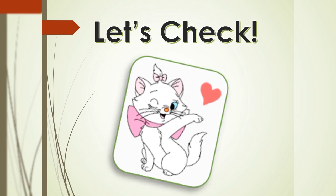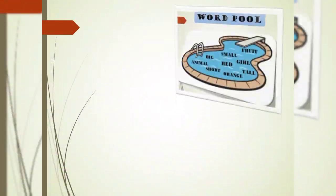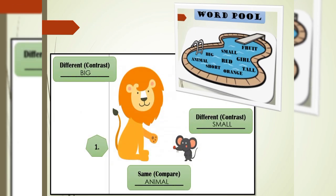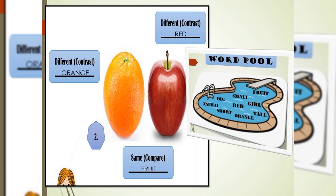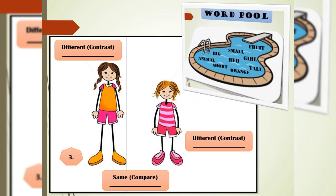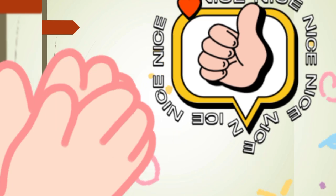Now, let's check. Picture number 1. The similarity of the images is that they are both animals while their difference is the other one is big and the other one is small. Picture number 2. The similarity of the images is that they are both fruits while their difference is their color. The other one is red and the other one is orange. Let's proceed to picture number 3. The similarity of the images is that they are both girls while their difference is their height. The other one is tall and the other one is short. You are all correct! Congratulations, learners! You are all amazing!